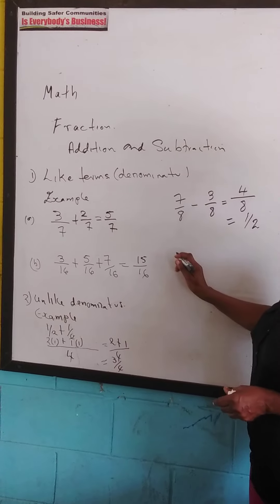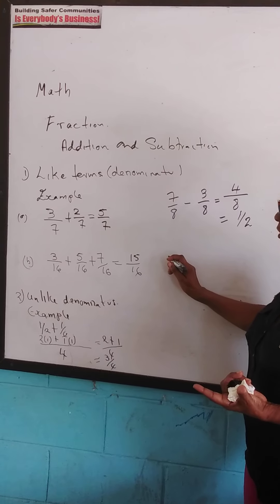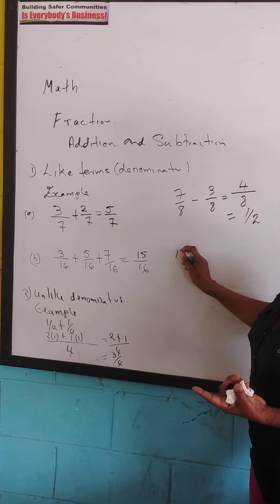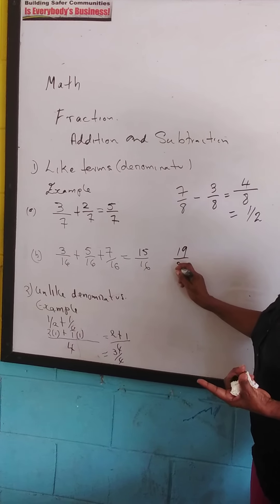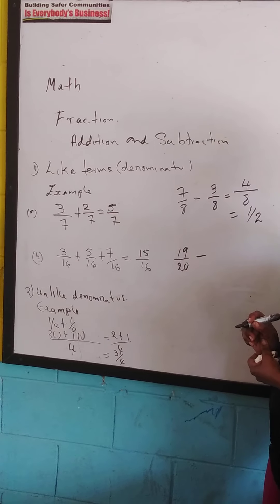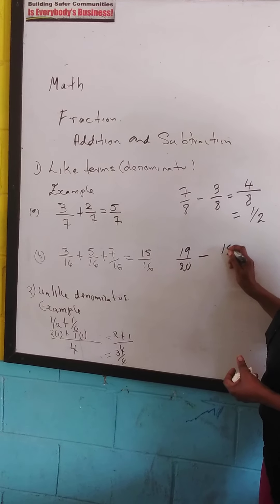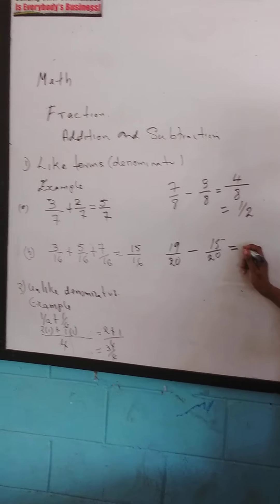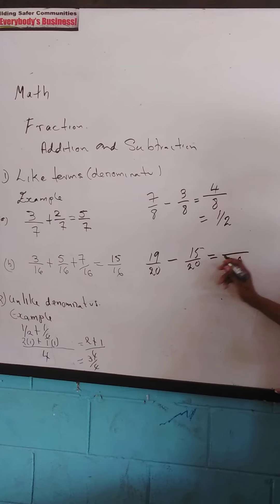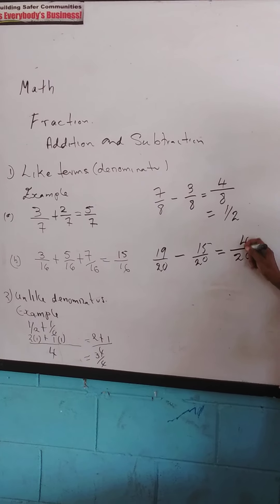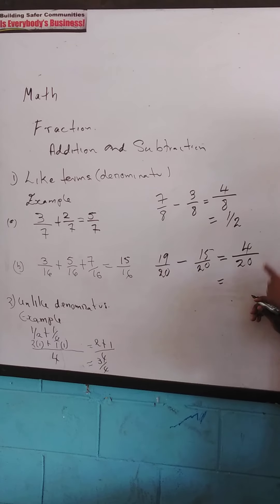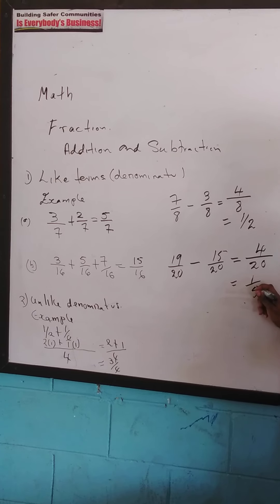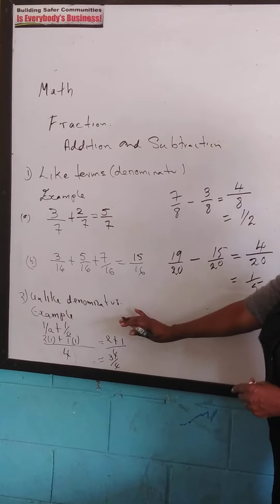We could have, for our next one, we could have 19 over 20 minus 15 over 20. We're going to keep our denominator, which is 20. And 19 minus 15 is 4. This can be simplified. 4 into 4, 1 times 4 into 20, 5. Let's just look at the last one, unlike denominators.